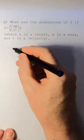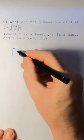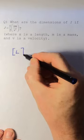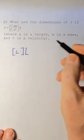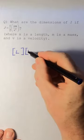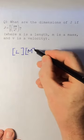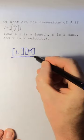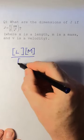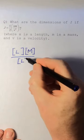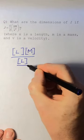If we want the dimensions of X and X is a length, that would be L. If we want the dimensions of M where M is mass, that would be big M. And then underneath we have velocity, and velocity is meters per second, which is L over T.